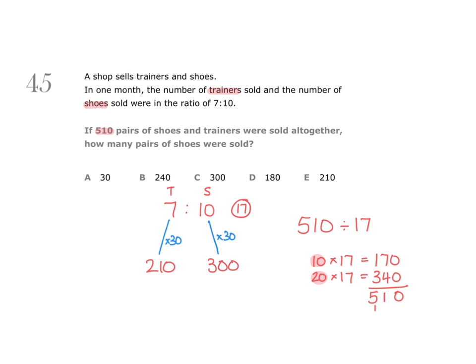As a final check, if I add together the number of pairs of trainers and the number of pairs of shoes, do I end up with 510 pairs of shoes and trainers altogether? Yes I do. So that's a double check for getting the answer right.